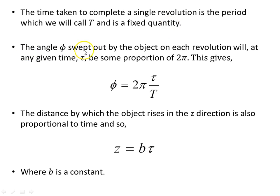The angle phi swept out by the object on each revolution will at any given time tau be some proportion of 2pi, because it goes from 0 to 2pi and then back starting from 0 again all the way around, because it completes one revolution, one complete revolution as it travels around. And so for instance if the period were 10 seconds, and the clock says that we're 5 seconds into that revolution, then 5 over 10 is a half, so we've swept out half of 2pi. So we will have swept out pi.